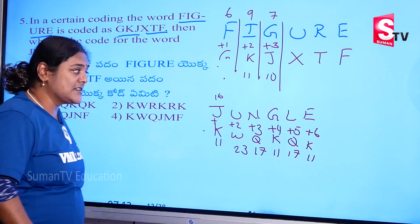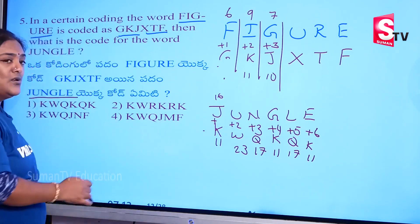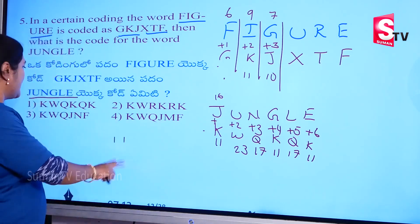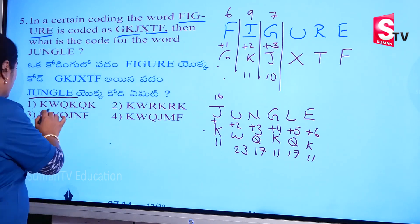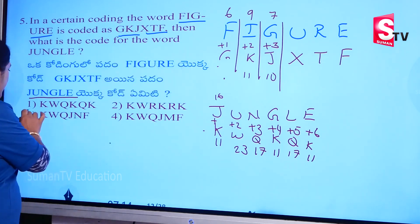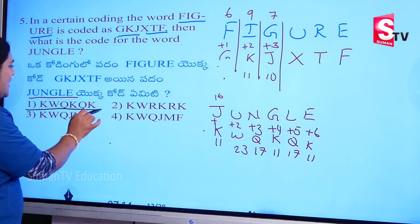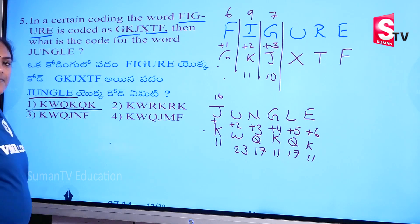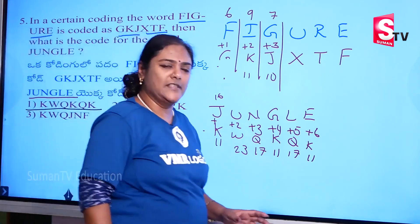Why do we have to do it? K, W, Q, Q, K, Q, K. Where are we? First, we have to do it: K, W, Q, K, Q, K. Okay, first we have to do it.